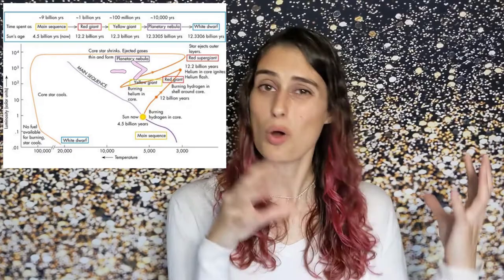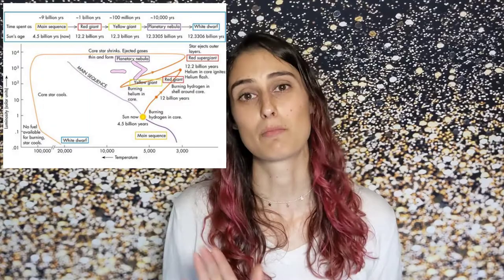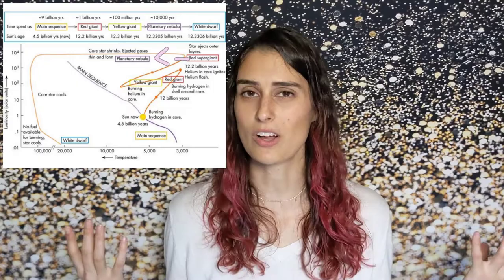Then once the helium in the core runs out, the core will contract as the outer part of the star cools and expands, and the star will move up the asymptotic giant branch for about 10 million years. As the outer layers begin to be ejected, the core becomes exposed and ionizes the ejected material around it, becoming what we call a planetary nebula — even though it has nothing to do with planets.